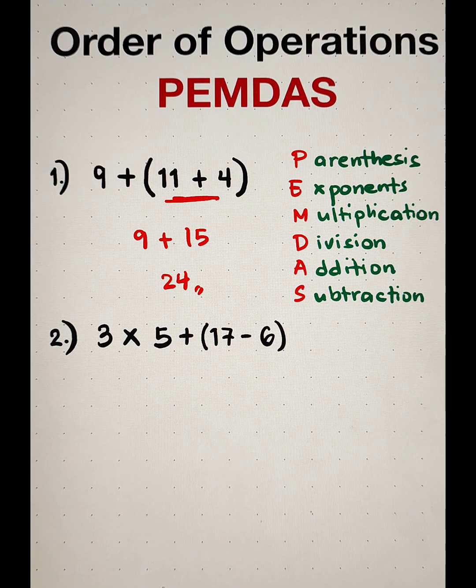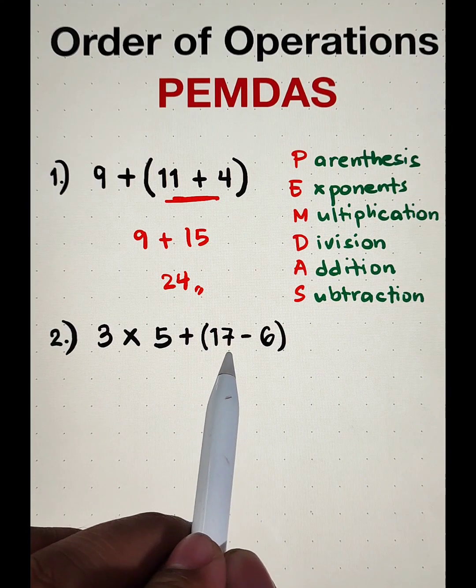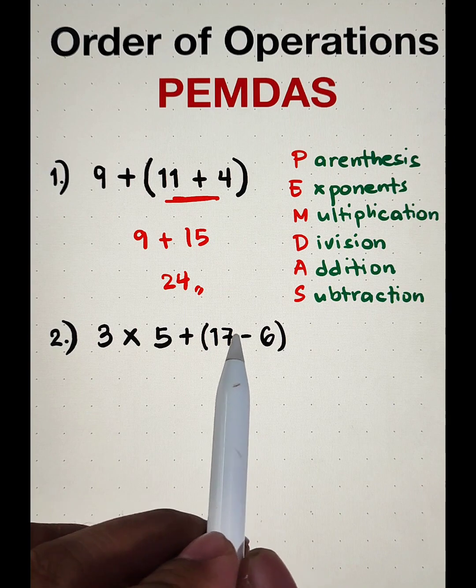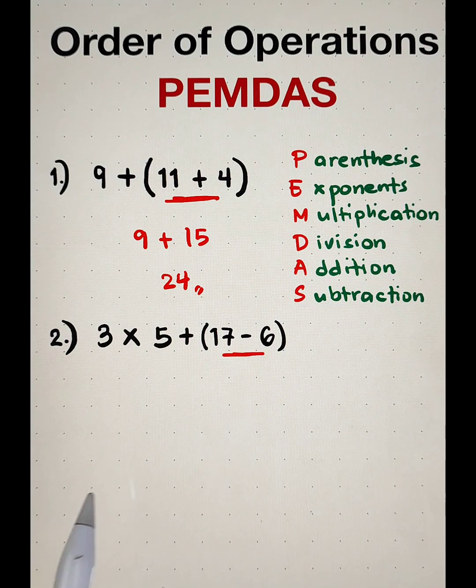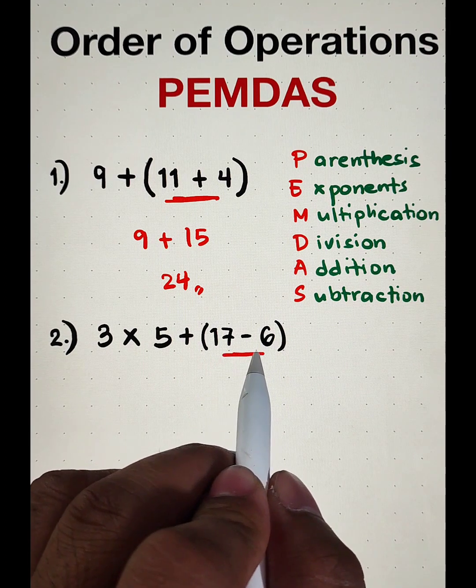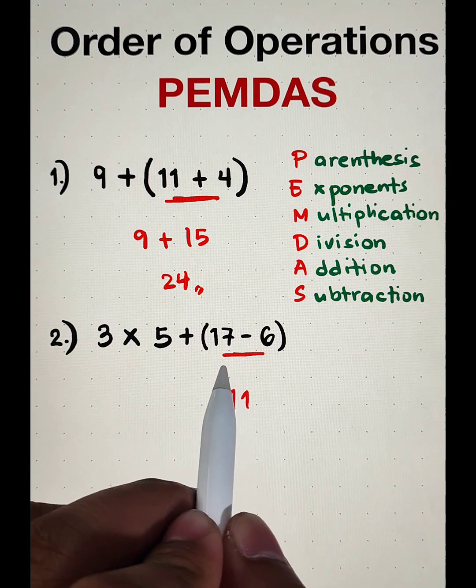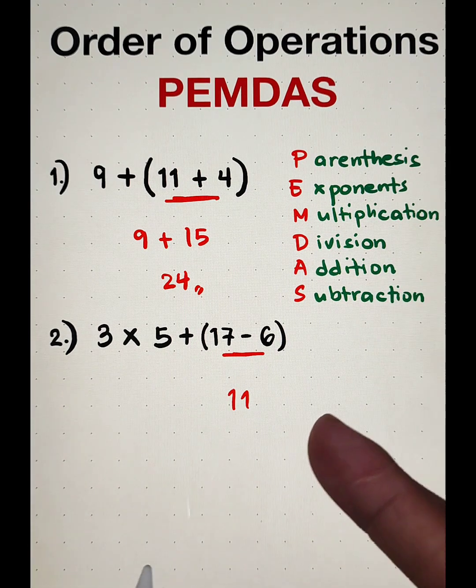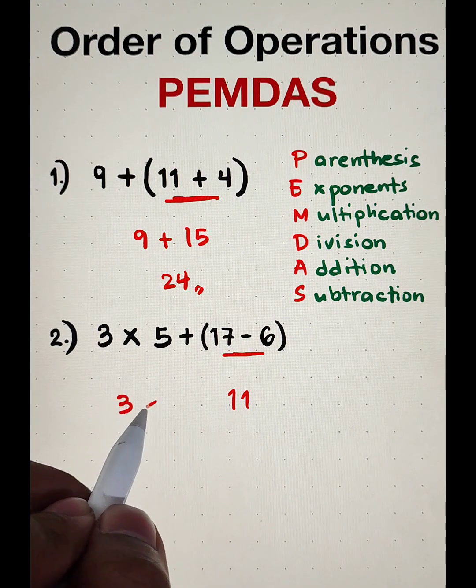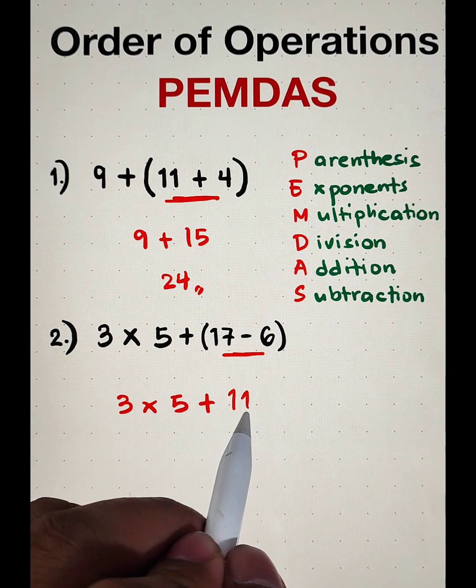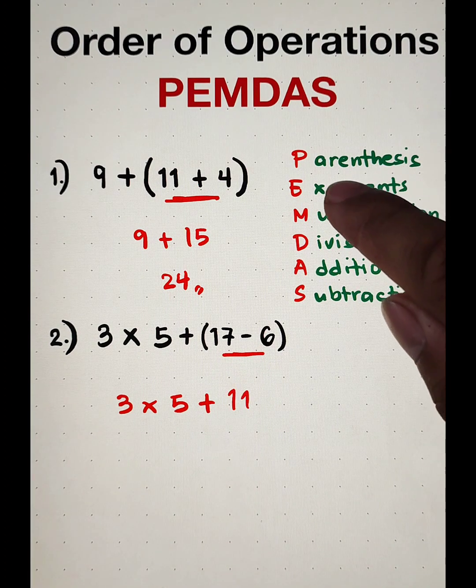Now, let's move on with item number 2. For number 2, we are given 3 times 5 plus the quantity of 17 minus 6. So, remember, PEMDAS, let's start first in simplifying this parentheses. What we have here is 17 minus 6, and this will give us the answer of 11. Since single na lang to, single number na lang sya, there's no need for us to enclose this number by parentheses. So, what we need to do is to copy this part. We have 3 times 5 plus 11. So, again, this 11, it came from 17 minus 6 because we accomplished first the parentheses.